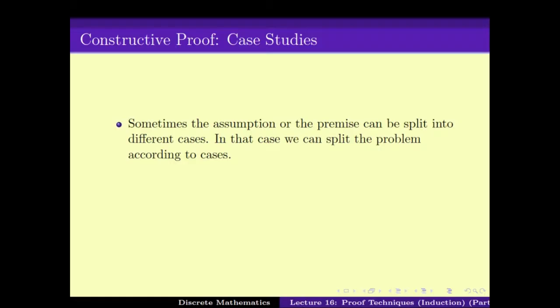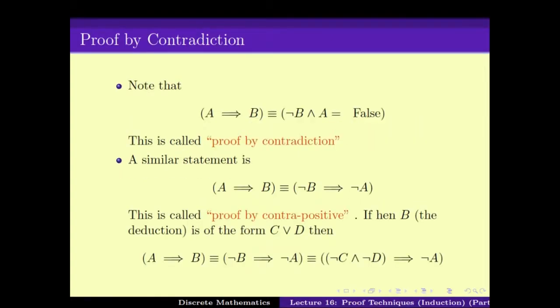We also saw the case study, where we can split the assumptions into an OR of a finite number of them. That in turn helps us split the problem into an OR of a finite number of subproblems. Namely, if A is equal to C OR D, then A implies B is the same as C implies B and D implies B.